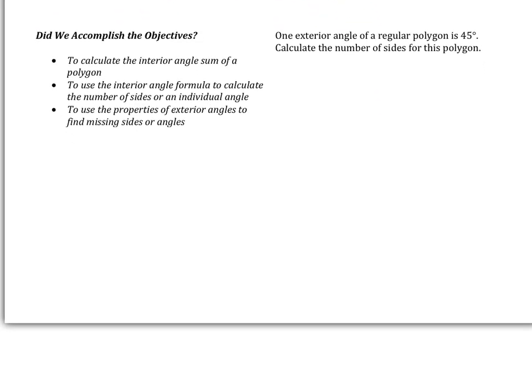We've covered two main topics: interior angles and exterior angles in various polygons. The last practice problem: one exterior angle of a regular polygon is 45 degrees — calculate the number of sides. The answer is eight sides. A few more optional examples are on the next page if you need extra practice.